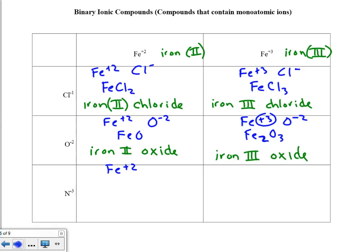Fe⁺² and N⁻³. Crisscrossing, we get Fe₃N₂. The name of this substance is iron 2 nitride.